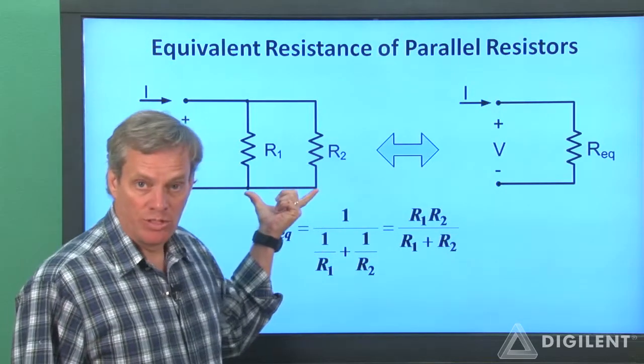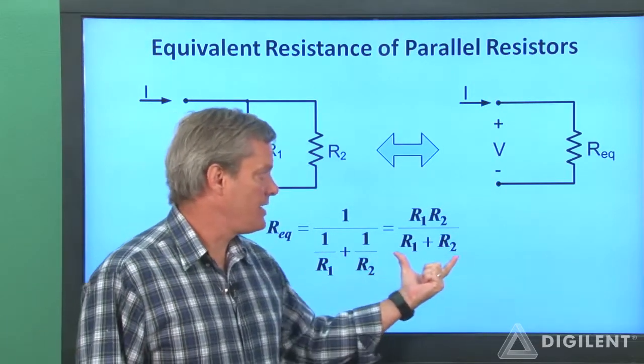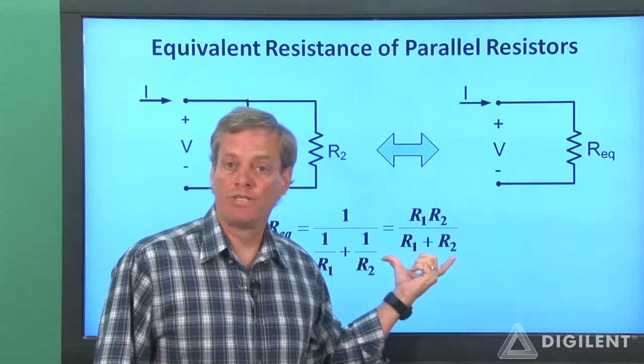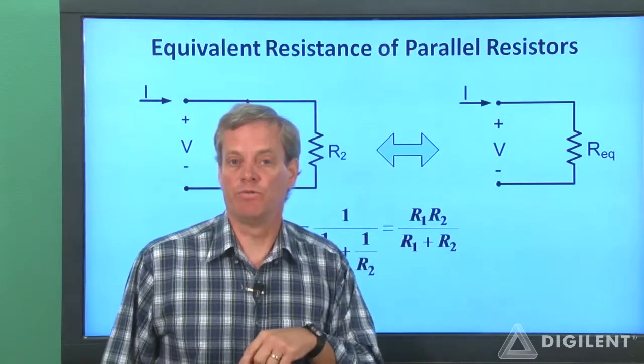As we saw previously, if we have a combination of only two resistors, this is equal to R1 times R2 over R1 plus R2. It's the product of the two resistances divided by the sum of the two resistances.